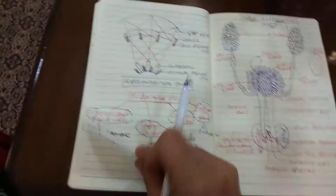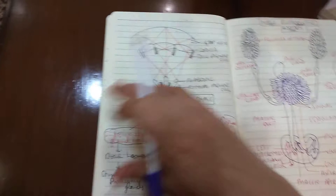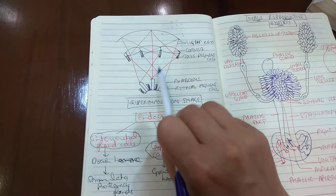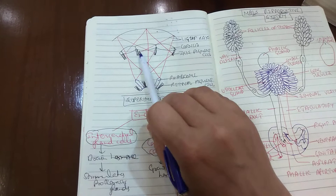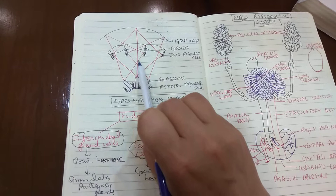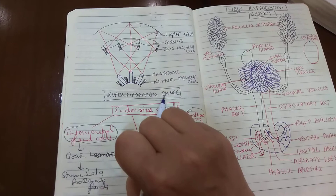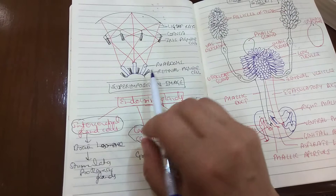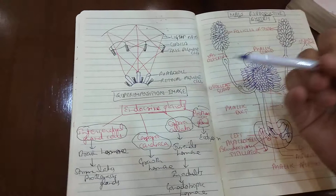During dim light, the pigments are retracted, so all light — including that falling obliquely on the cornea surface — also reaches the rhabdom. The image is formed by overlapping light rays and is referred to as a superimposition image. This image is less sharp compared to the opposition image, but it is very useful when light is very dim, particularly at night to see objects.